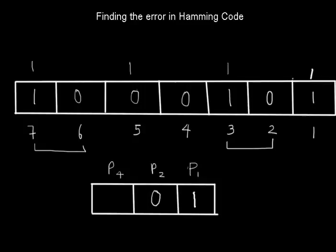Now check out for P4, so you have to check the block 4, 5, 6, 7. There is only one 1, so this is also not in even parity, so we will have to put a 1 over here. So now there exists an error in P1 and P4 blocks. So we have found out and written 101: corresponding to P1 there is an error, P2 there is no error, P4 there is one.